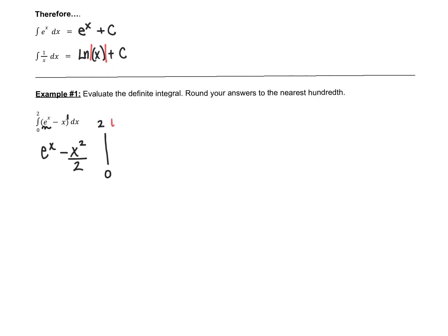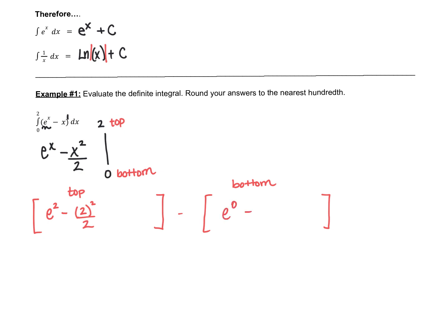So this problem combines the e to the x antiderivative with the power rule we did before. We're still going to do top minus bottom when we substitute. I'm going to use two sets of brackets — one for the top and one to subtract the bottom. Everywhere I see an x, I'm going to plug in 2 first, then plug in 0. So for the top: e to the 2 minus 2 squared over 2. And for the bottom: e to the 0 minus 0 squared over 2.